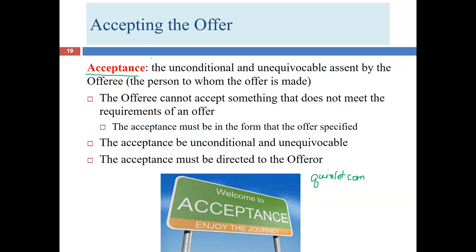Acceptance is a noun. We see here that we have 'assent,' also a noun — these are basically synonyms meaning agreement or saying yes to something. However, not any assent will work as a contractual acceptance. We have additional requirements. Specifically, we have two adjectives that come before assent: the assent has to be unconditional and unequivocal. We also need a third thing — the assent has to be from the offeree.